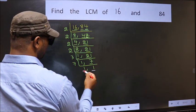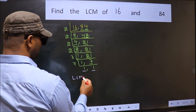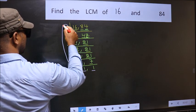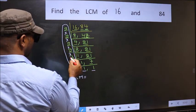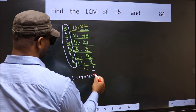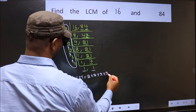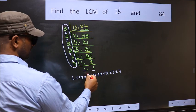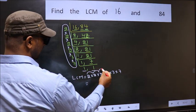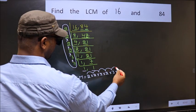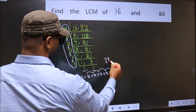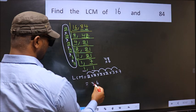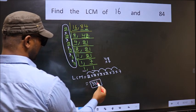We got 1 in both places. So our LCM is the product of these numbers: 2 × 2 × 2 × 2 × 2 × 3 × 7. Multiplying: 2×2=4, ×2=8, ×2=16, ×3=48, ×7. 7×8=56, carry 5; 7×4=28, plus 5 is 33. So 336 is our LCM.